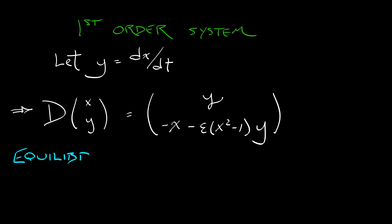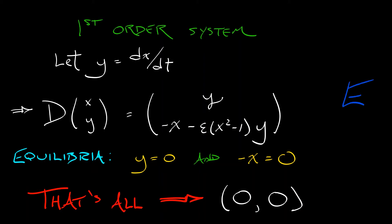Our next step, of course, solve for the equilibria. y has to be equal to zero. And what happens when we plug in y equals zero into the second term? The only thing that we have is that x equals zero. That's it. The only equilibrium we have is at the origin. Wow, this system is going to be so easy to work with just one equilibrium.